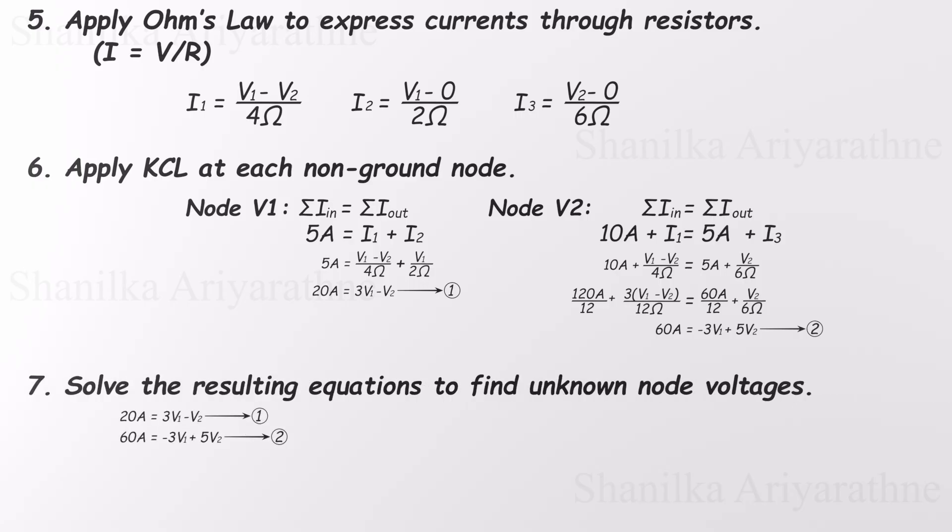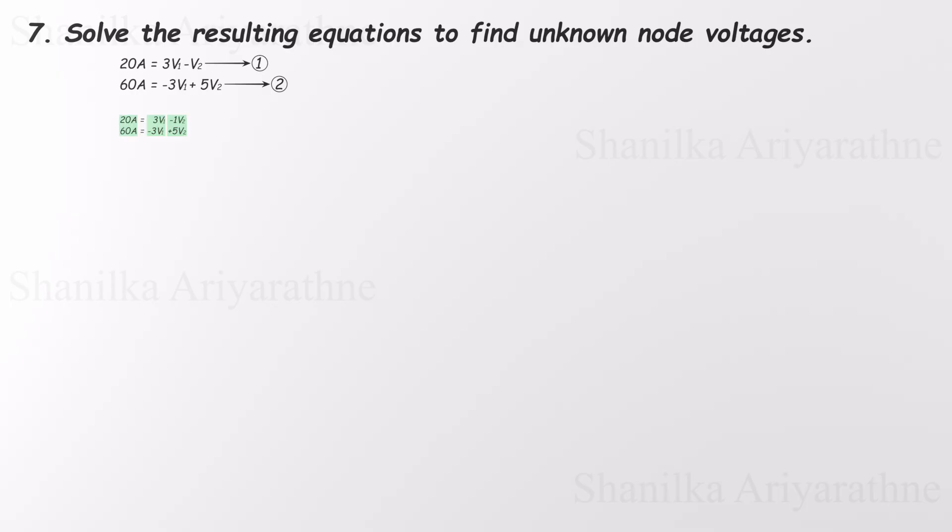Now we can solve the two equations using basic algebra, like substitution or elimination. But when there are more than two variables, matrix methods often make things cleaner. Let's rewrite the equations in matrix form. Just make sure the order of the variables, V1 and V2, is the same in both equations. That's important for accuracy. Once it's in matrix form, we'll use Cramer's rule. To do that, we first find the determinant of the coefficient matrix. For a 2 by 2 matrix, it's easy. Multiply the diagonal elements and subtract. In our case, the determinant is 12.